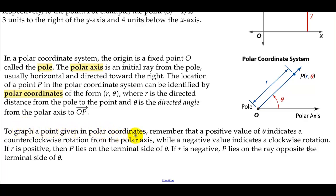To graph a point given in polar coordinates, remember that a positive value of θ indicates a counterclockwise rotation from the polar axis, just like the unit circle, while a negative value indicates a clockwise rotation. If r is positive, then P lies on the terminal side of θ. If r is negative, P lies on the ray opposite the terminal side of θ.